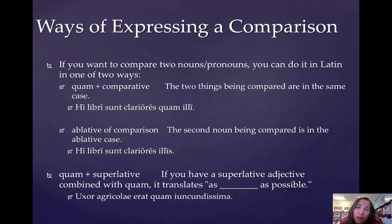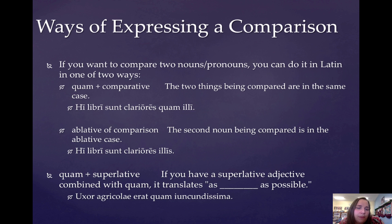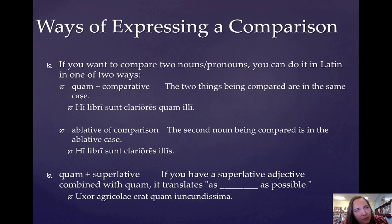The last thing you should know is that when you use quam with a superlative adjective, you translate the entire phrase — quam plus the superlative — as 'as blank as possible.' For example: 'uxor agricolae erat quam iucundissima' means 'the farmer's wife was as pleasant as possible.' Take good notes. I'll answer any questions you have in class, and I hope you have a lovely evening. Valete.